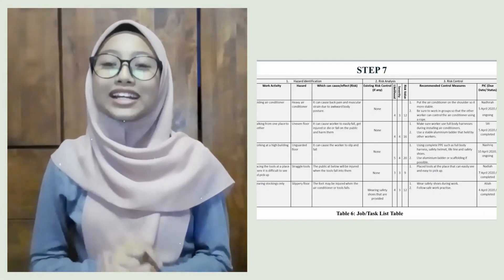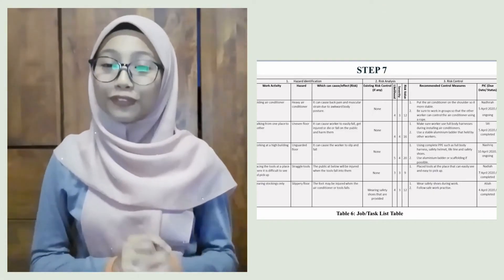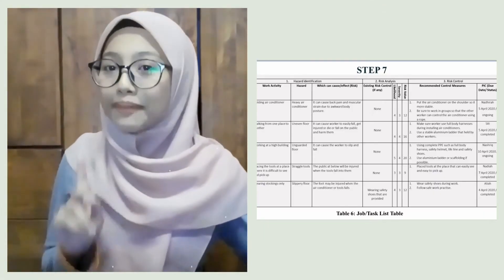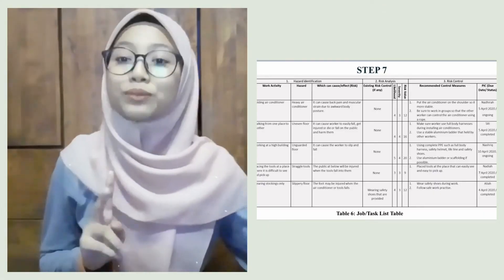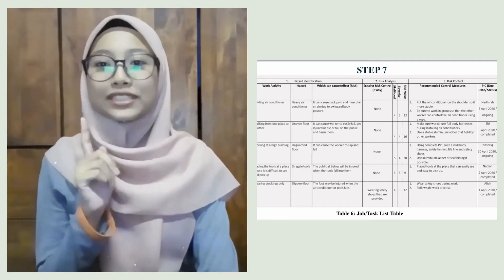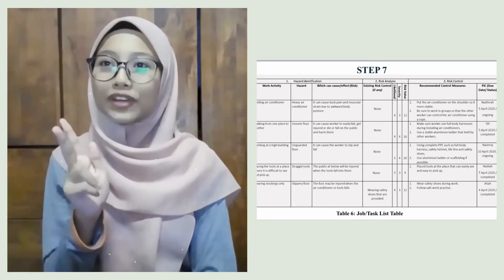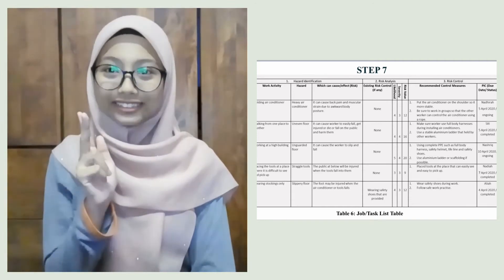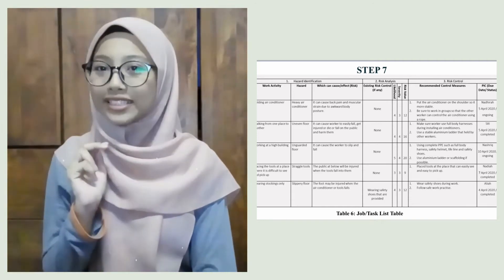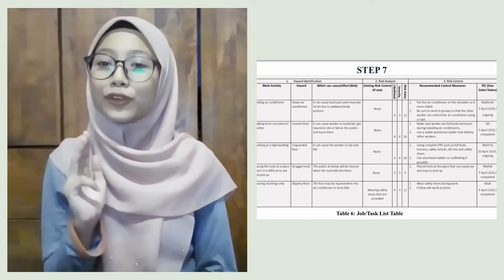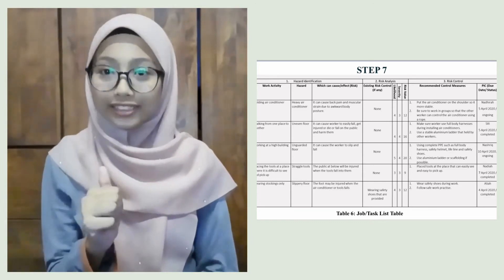Table seven, the high-risk form, is the same as step two but it includes severity, likelihood, risk value, and person in charge. Under person in charge, we have due date and status.